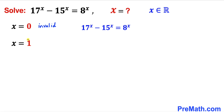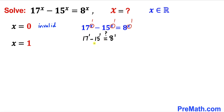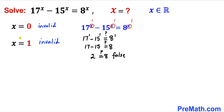Now let's check our solution for x equal to 1. Wherever we see x, we replace it by 1. The equation becomes 17 to the power 1 minus 15 to the power 1 equals 8 to the power 1. On the left hand side, 17 minus 15 gives us 2. Is it equal to 8? That is false once again, so x equals 1 is also an invalid solution.